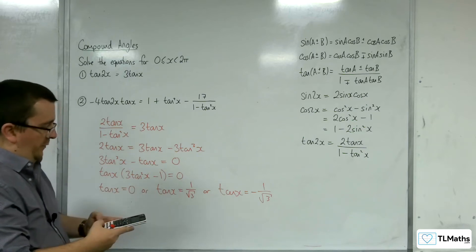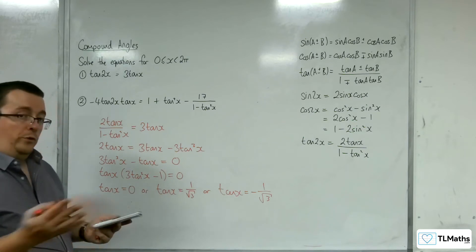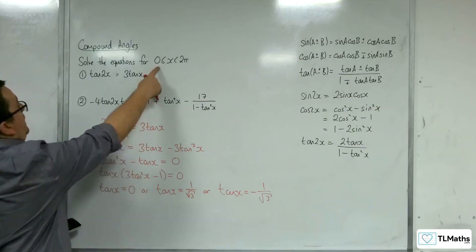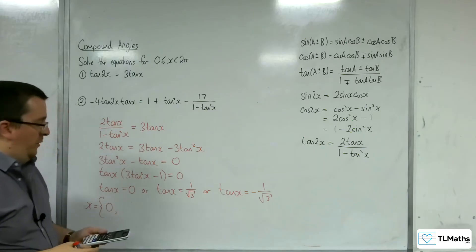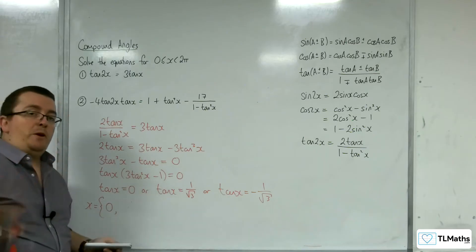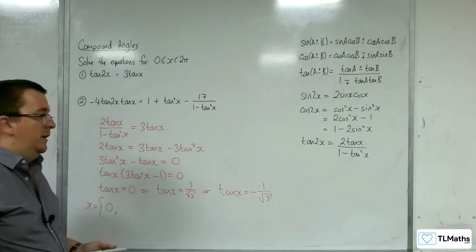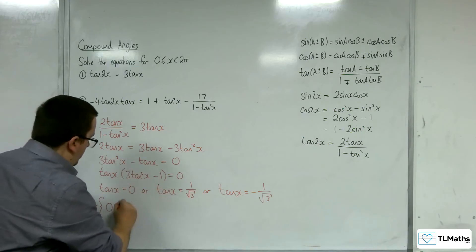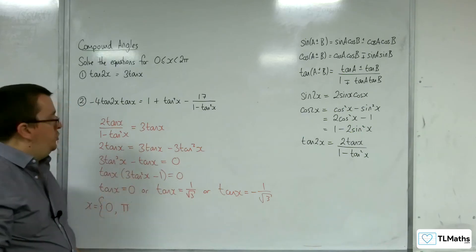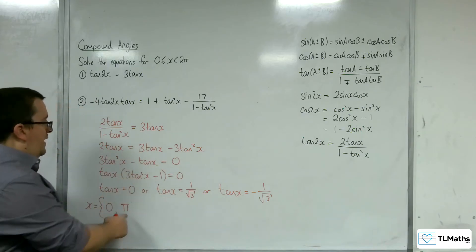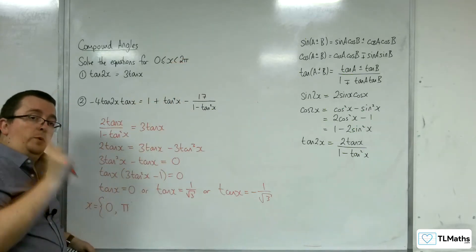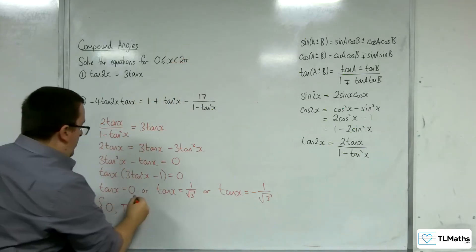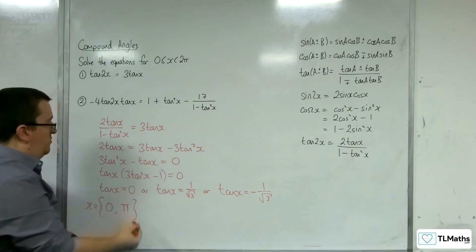If we do inverse tan of 0, we of course get 0. Zero is in the range, so x equals 0 is one possible solution. Tan has a period of pi, so I can add pi onto that and get another solution that's in the range. If I add pi to that again, I'm now outside the range because we're not including 2 pi, so we've got two solutions from that one.